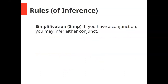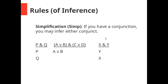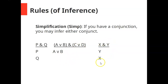The third rule is the rule of simplification, which is fairly straightforward: if you have a conjunction, you may infer either conjunct. If you know that P and Q, you're allowed to infer P, and you're also allowed to infer Q. You don't have to infer both of them. For example, if you know A or B and C or D, you're allowed to infer just A or B. It doesn't matter what order you infer them in.